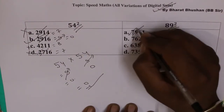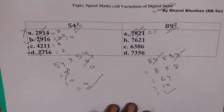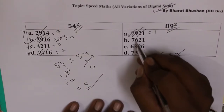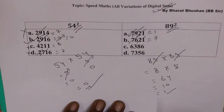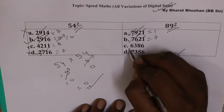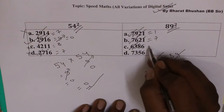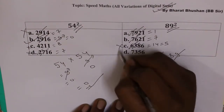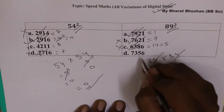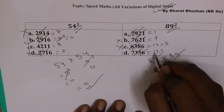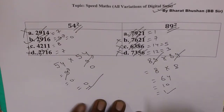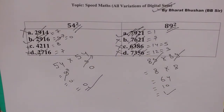Checking the options: 9 eliminate kar diya, 7 plus 2 is 9, eliminate again, leaving 1 — option A is correct so far. Next: 7 plus 2 is 9, 6 plus 1 is 7 — option B is not correct. Next: 6 plus 3 is 9, 8 plus 6 is 14, 1 plus 4 is 5 — not 1, so not the answer. D: 6 and 3 is 9, eliminate, 7 plus 5 is 12, 1 plus 2 is 3 — also not the answer. So option A is the correct answer.